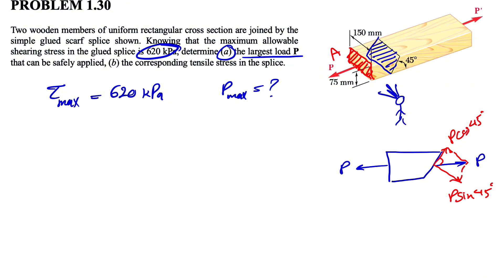For finding the A, we basically have the area of that rectangle, which is 150 times 75 in millimeter squared, or we can get 150 times 75 times 10 to the minus 6 in order to get it in meter squared.